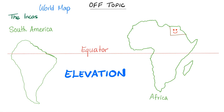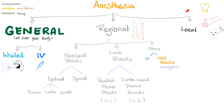Let's summarize anesthesiology: you have general, local, and regional. General is all over your body. Local is just a tiny location. Regional is in between. General can be inhaled or intravenous. Local is usually an injection or spray. For regional, you have neuroaxial block and limb blocks. Neuroaxial — neuro means nerve, axial means the axis of your body, which is the spinal cord — so this is epidural and spinal anesthesia. For the periphery, limb blocks: upper extremities use brachial plexus, lower extremities use lumbosacral plexus blocks. You also have IV and autonomic nervous system blocks for regional anesthesia.